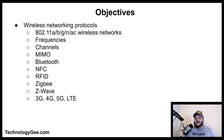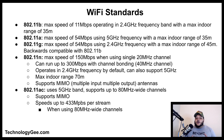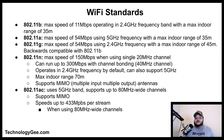The Wi-Fi standards: there are five Wi-Fi standards. The 802.11b has a maximum speed of 11 megabits per second operating in the 2.4 GHz frequency band with a maximum indoor range of 35 meters. The 802.11a has a max speed of 54 megabits per second using the 5 GHz frequency band with a max indoor range of 35 meters.